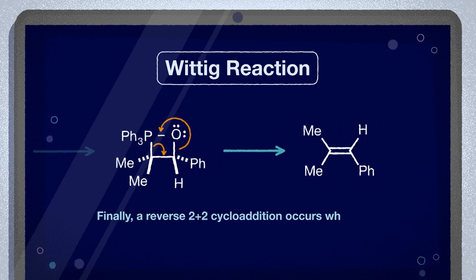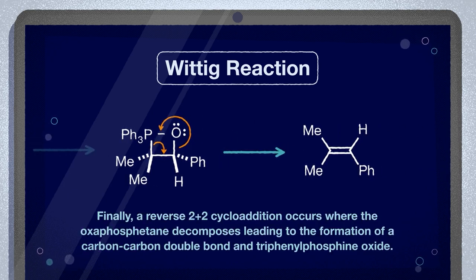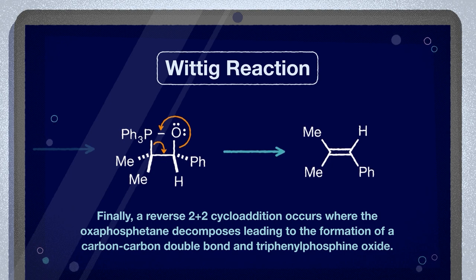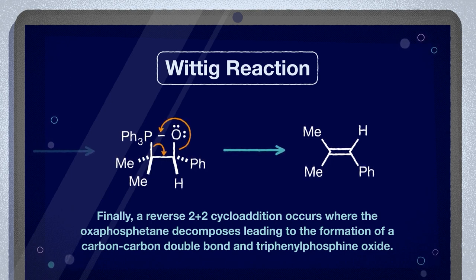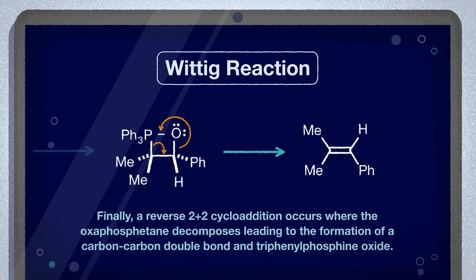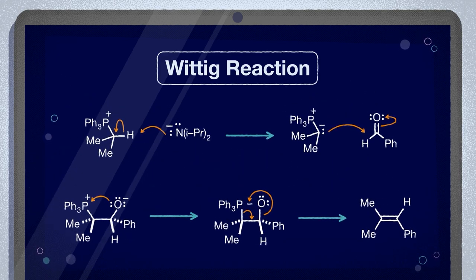Finally, a reverse 2-plus-2 cycloaddition occurs, where the oxaphosphatane decomposes, leading to the formation of a carbon-carbon double bond and triphenyl phosphine oxide. The alkene as a final product is formed.